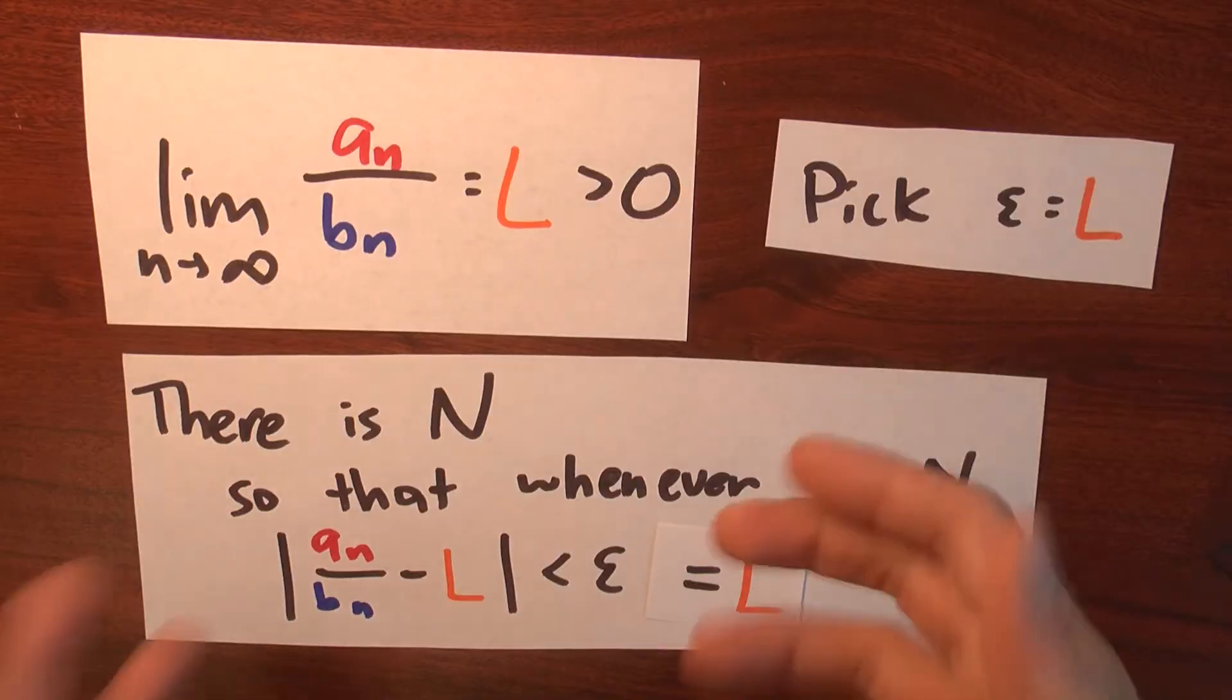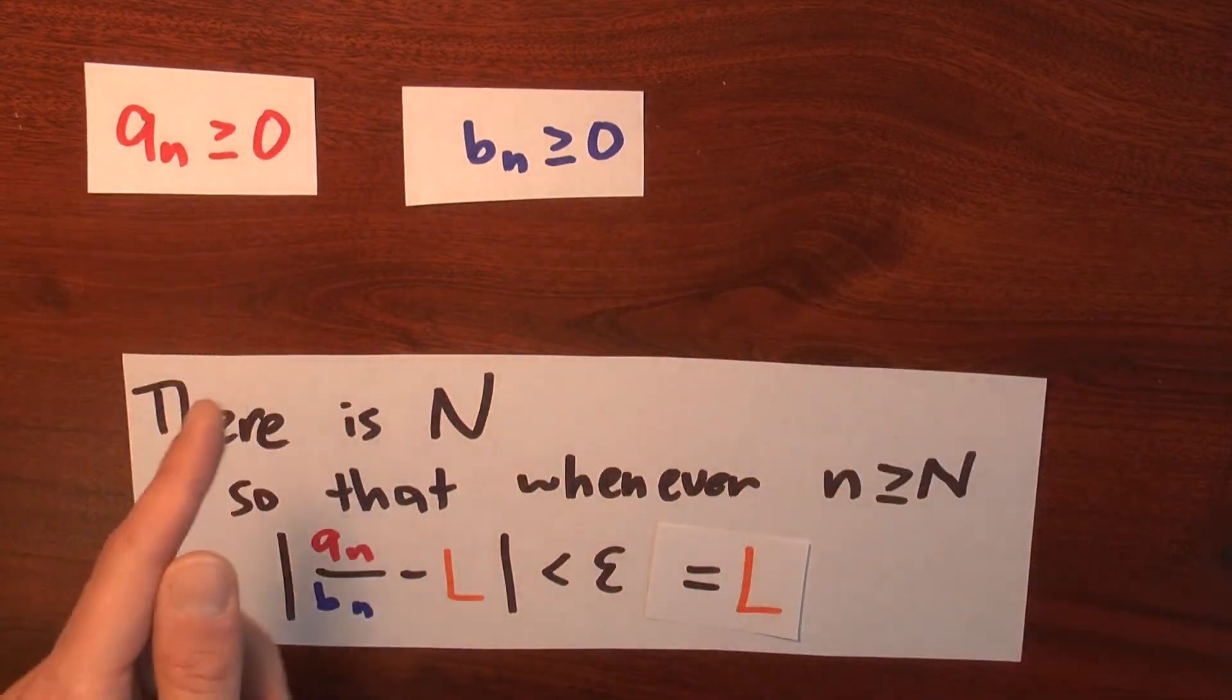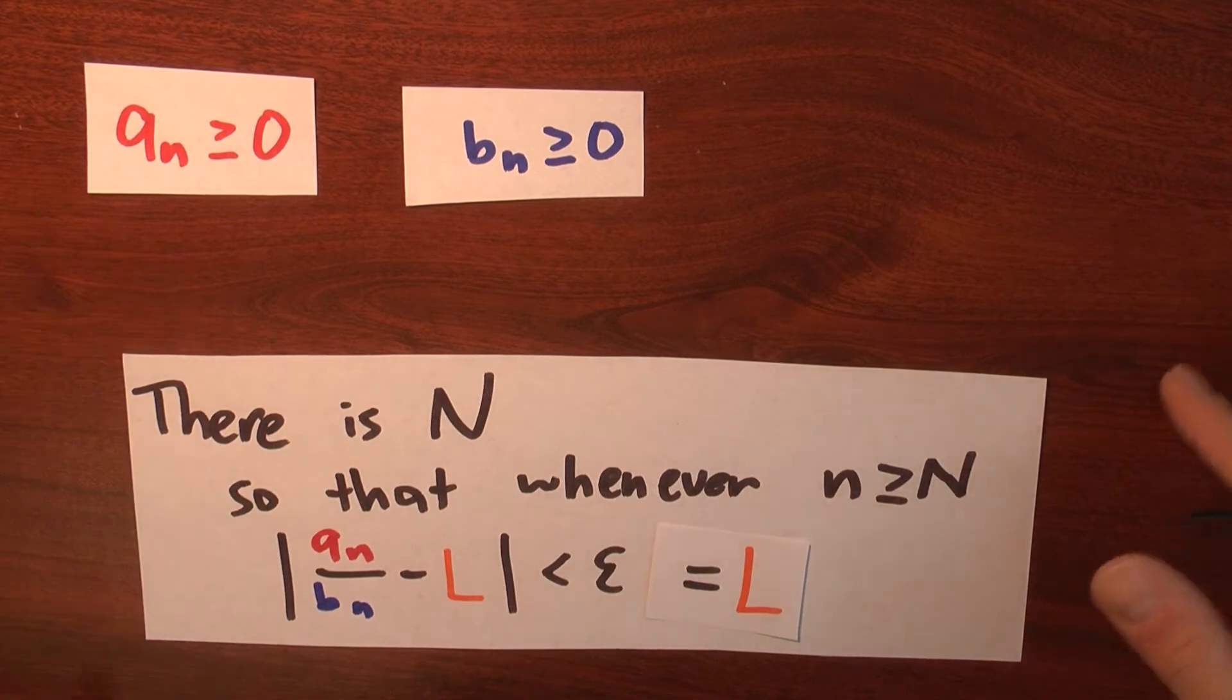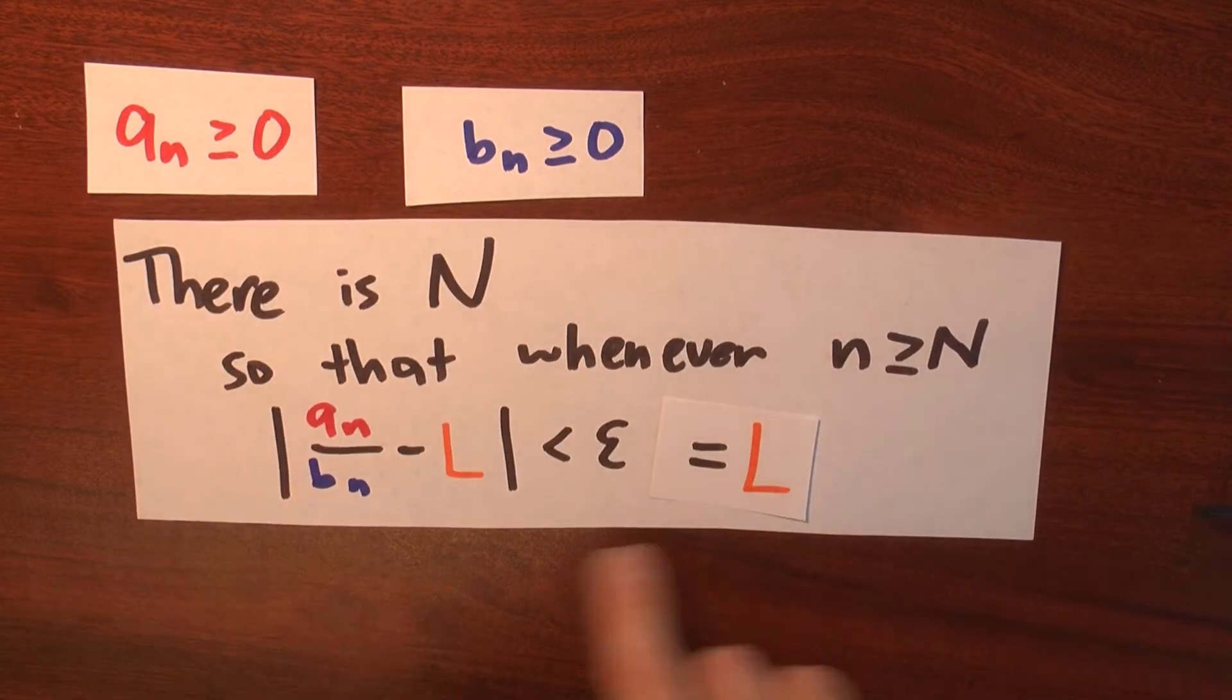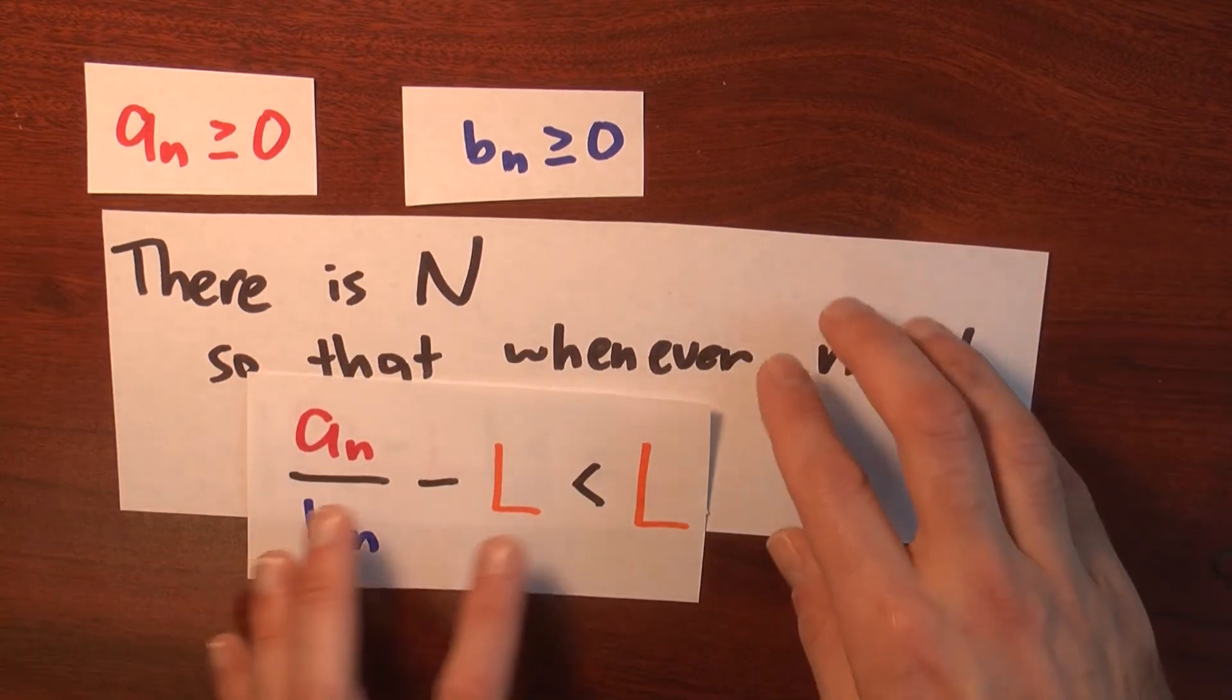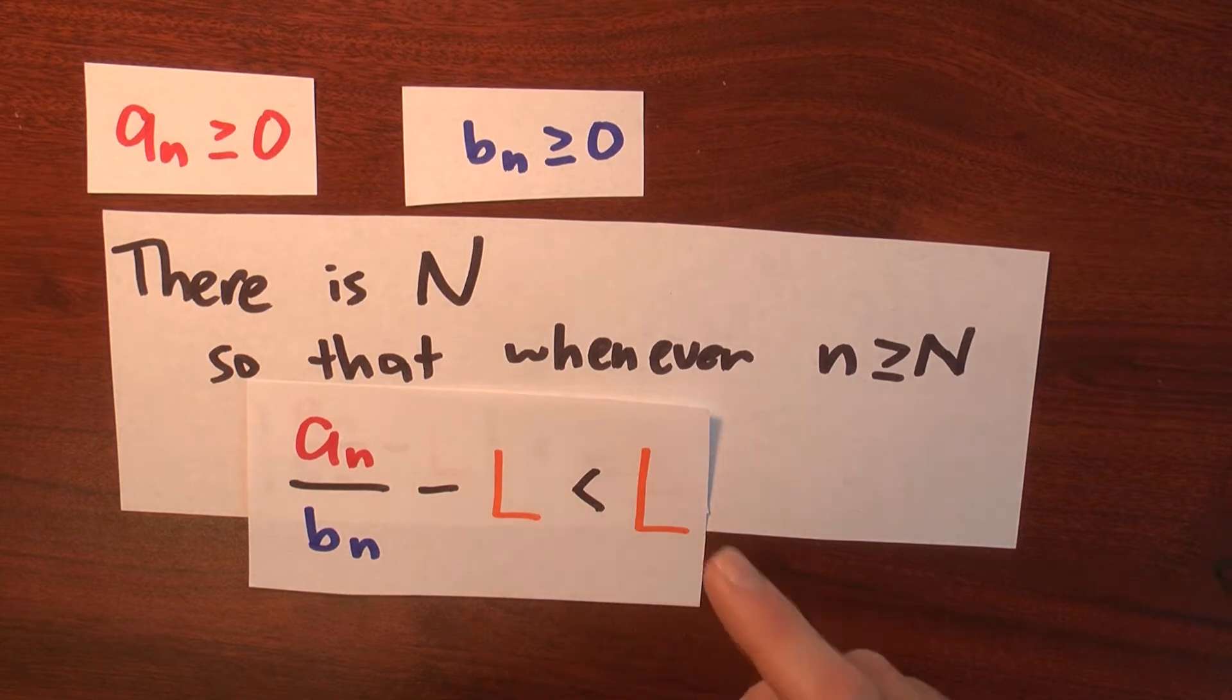That lets me compare a sub n and b sub n. Let me make this assumption that the a sub n's and the b sub n's are non-negative. I'm going to want that because I'm going to apply the comparison test in a moment. So I can simplify this a bit. Instead of making this claim, I can just get rid of the absolute value bars. It's still true, a sub n over b sub n minus L is less than L.